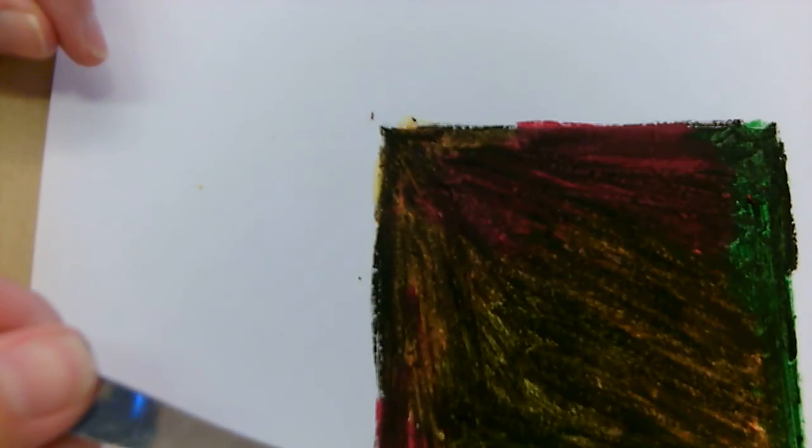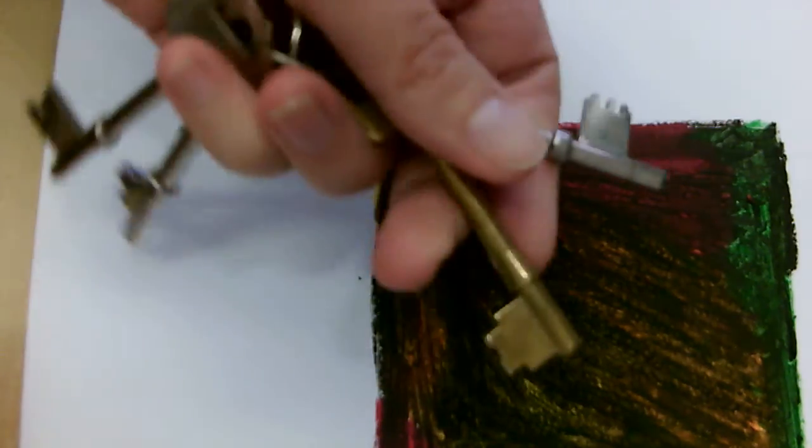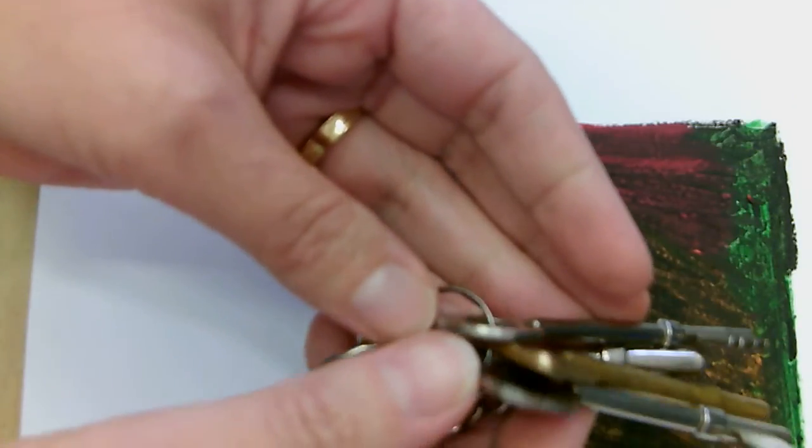Now once you've done that we're going to start to scratch through and you can use anything to scratch through. You could use a fork, you can use a key, you can use a drawing pin, whatever you like.